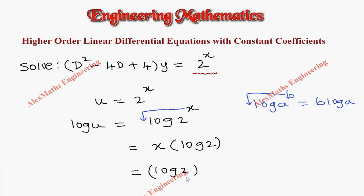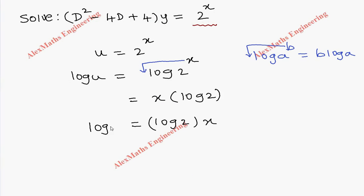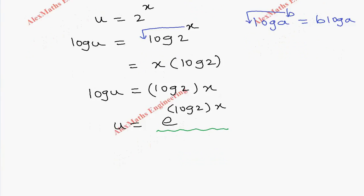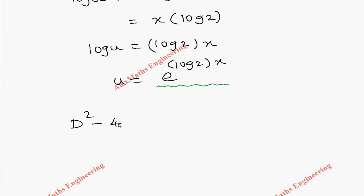When I remove log here, the other side we have to write e power, so u = e^(log2·x). The question they have given is 2^x, which we named as u, and we got u in exponential form. So this we have to replace: (D² - 4D + 4)y = e^(log2·x).